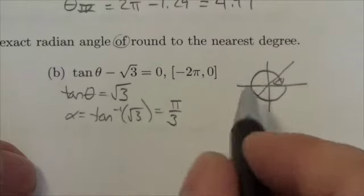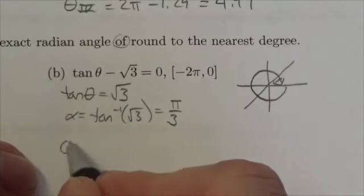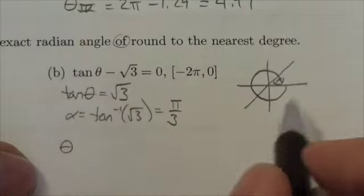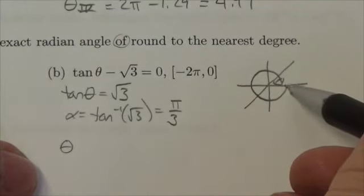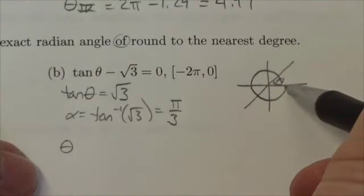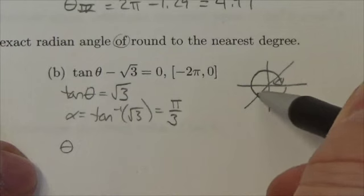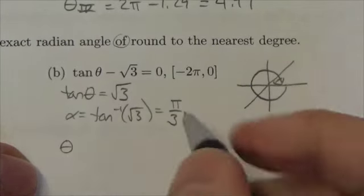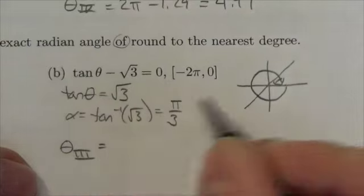Now we'll take that reference angle and put it in the proper quadrants. When I follow along the domain with the arrow I've set up, the first one I get to is in the third quadrant.